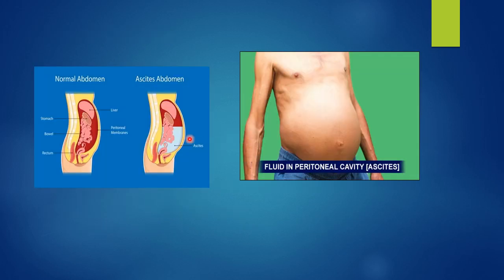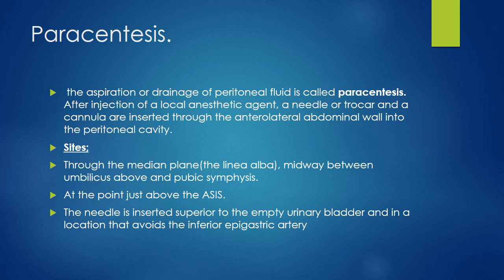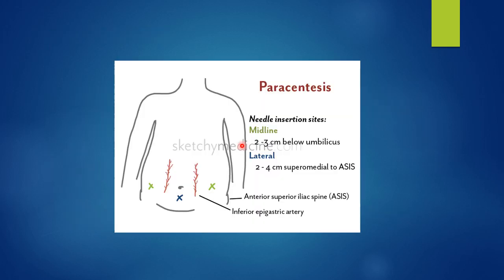This diagram shows the presence of ascites in the peritoneal cavity — fluid which causes distension of the abdominal cavity. Drainage of peritoneal fluid is called paracentesis. The sites for paracentesis: one site is through the median plane in the linea alba, midway between the umbilicus above and the pubic symphysis below. The other point is superomedial to the anterior superior iliac spine. The needle is inserted superior to the empty urinary bladder to avoid injury to the urinary bladder, and at a location that avoids the inferior epigastric artery. We can see the sites for paracentesis — this is one site midway between the umbilicus and pubic symphysis, and this is the other site superomedial to the anterior superior iliac spine. We must protect the inferior epigastric artery as well as the urinary bladder.